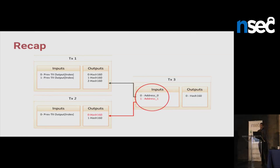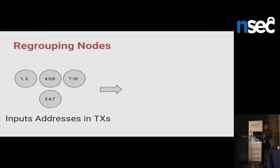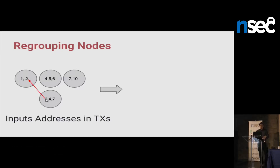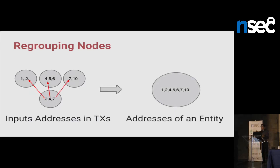Those two addresses belong to one entity — it could be a person, an automated system, a laundering scheme, anything — but it belongs to one entity on the network. For example, in this slide I have four transactions that I parsed. I found that addresses 1 and 2 were used together in a transaction. Addresses 4, 5, 6 were used simultaneously. And 7, 10, and another transaction used 2, 4, 7. So basically I can associate them: the person has addresses 1, 2, 4, 7 because they reused the same addresses in different transactions. By doing this, you're leaking the information, and you can do this for all nodes, merge them together, and tell what all the addresses of an entity are.